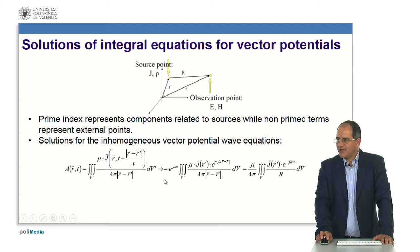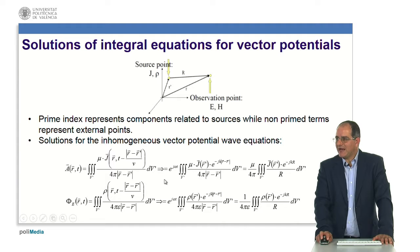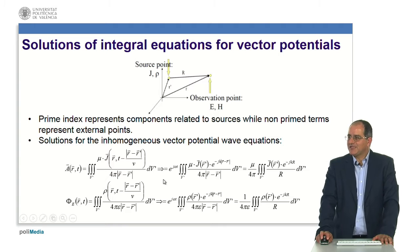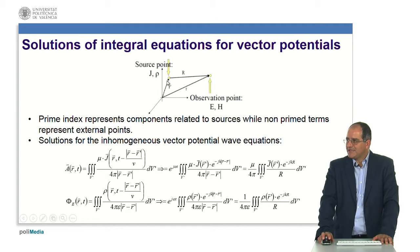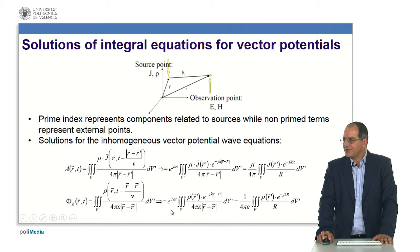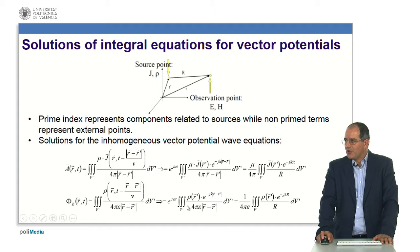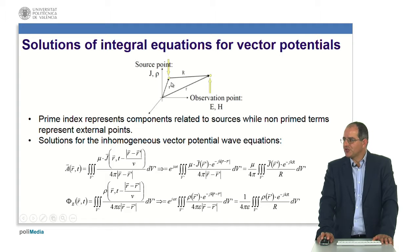If I do the same for the corresponding auxiliary scalar electric potential, I can show that it depends on the 3D integral of the corresponding charge density at the source point, and if I move to the frequency domain, this expression will be closely related to the 3D Fourier transform of the charge density feeding the corresponding source point.